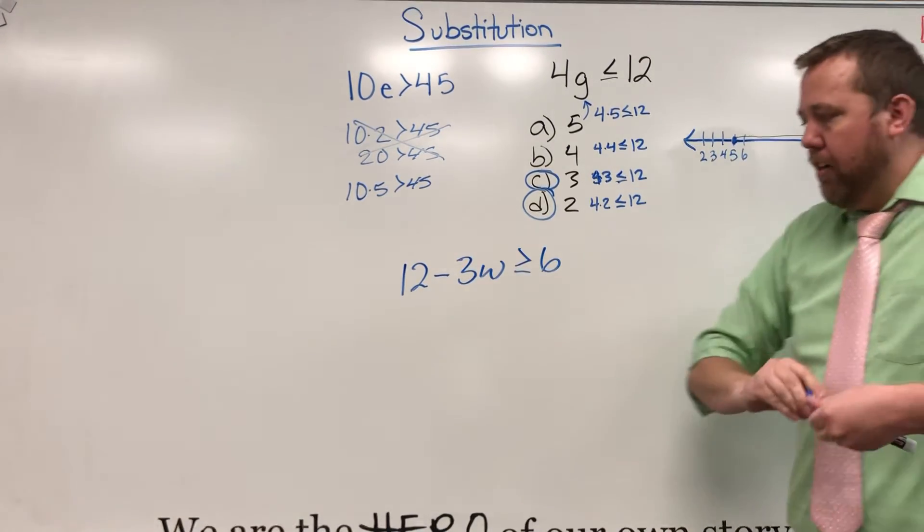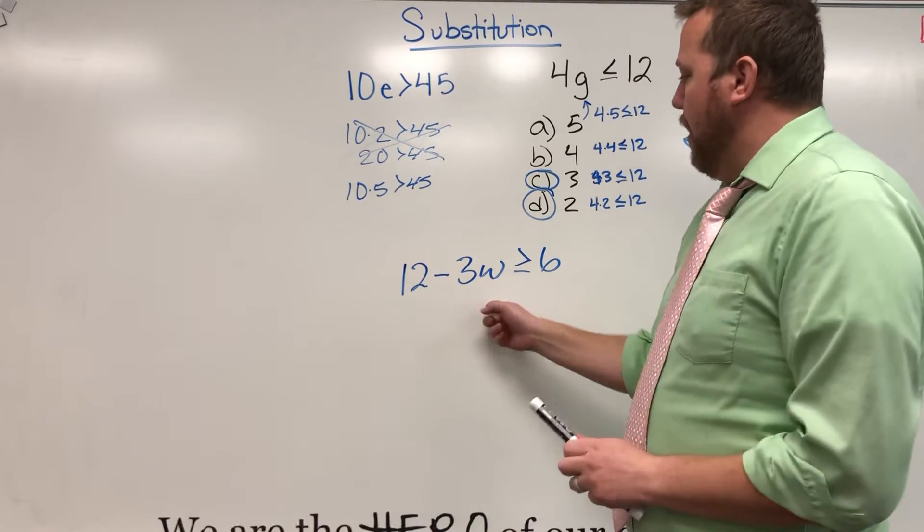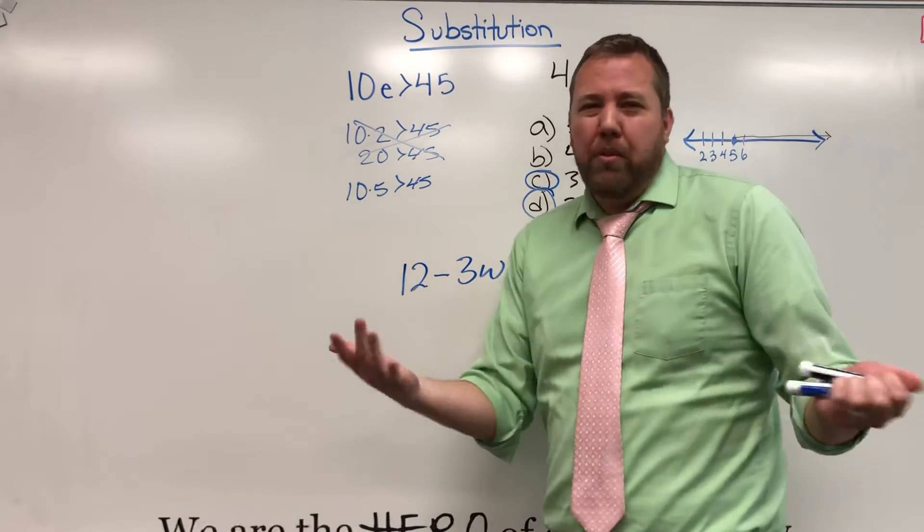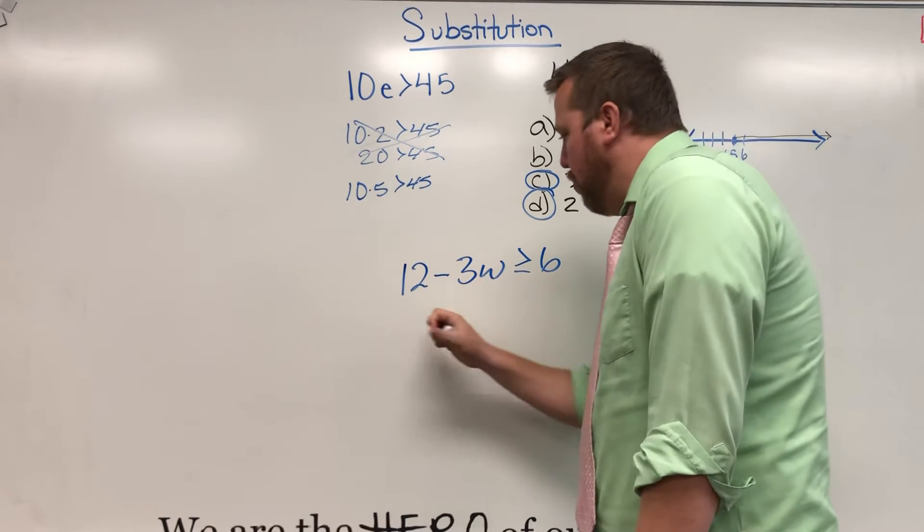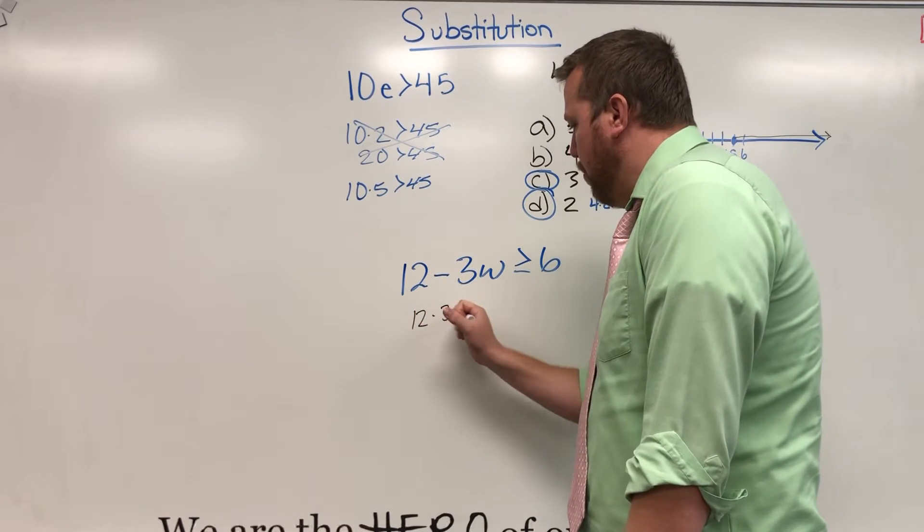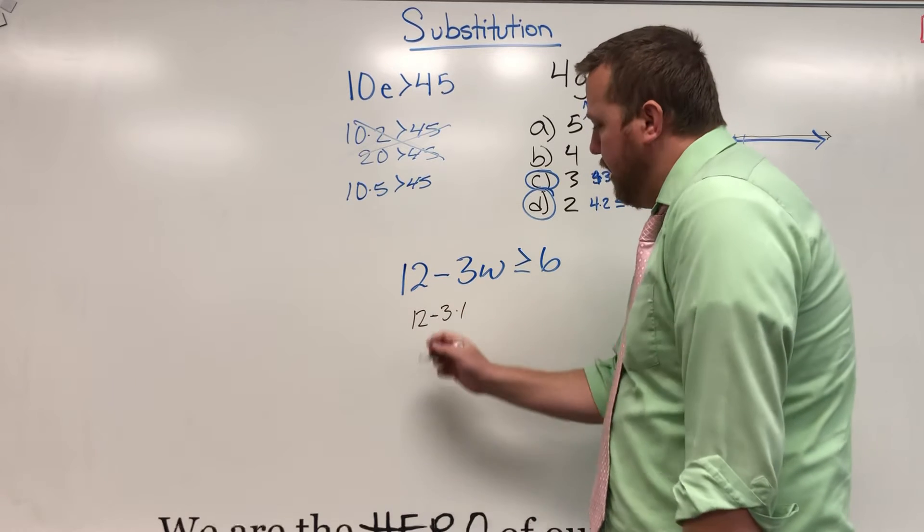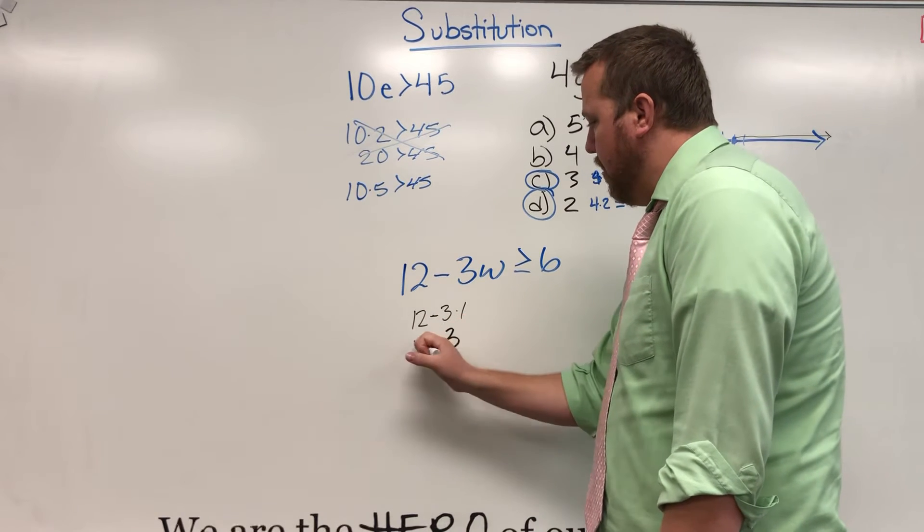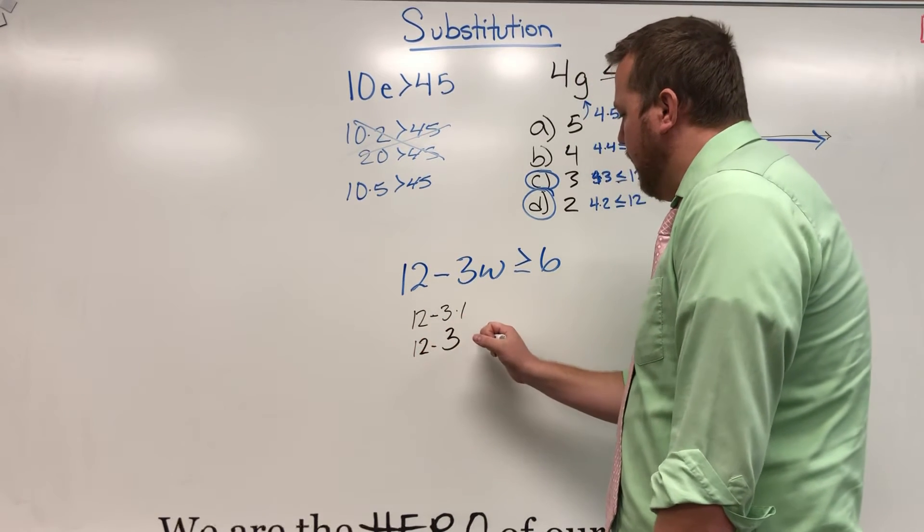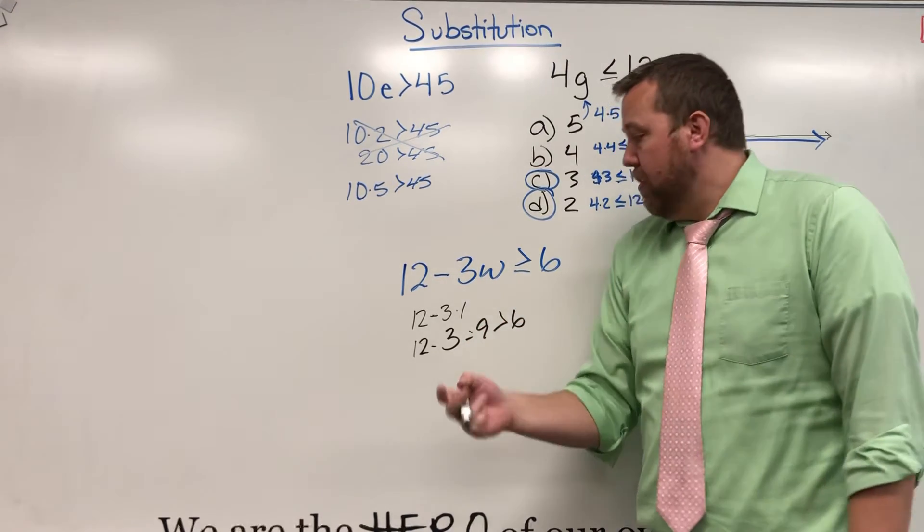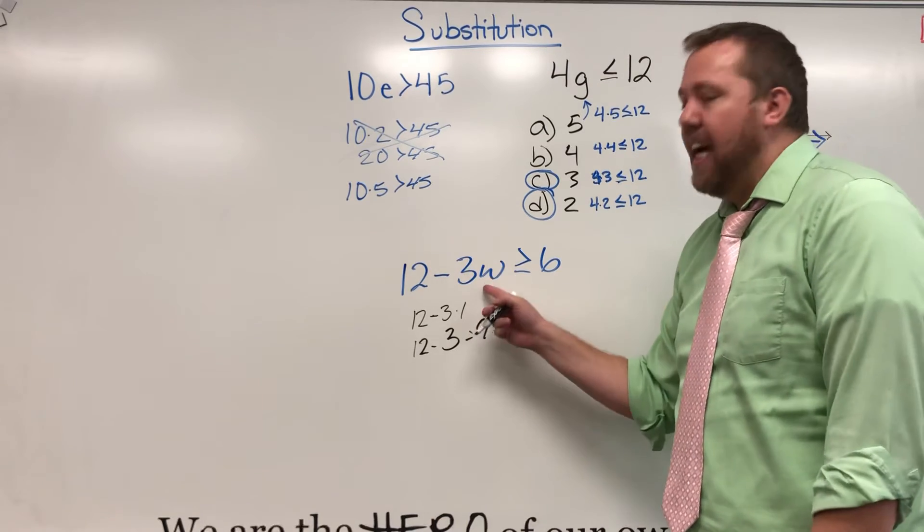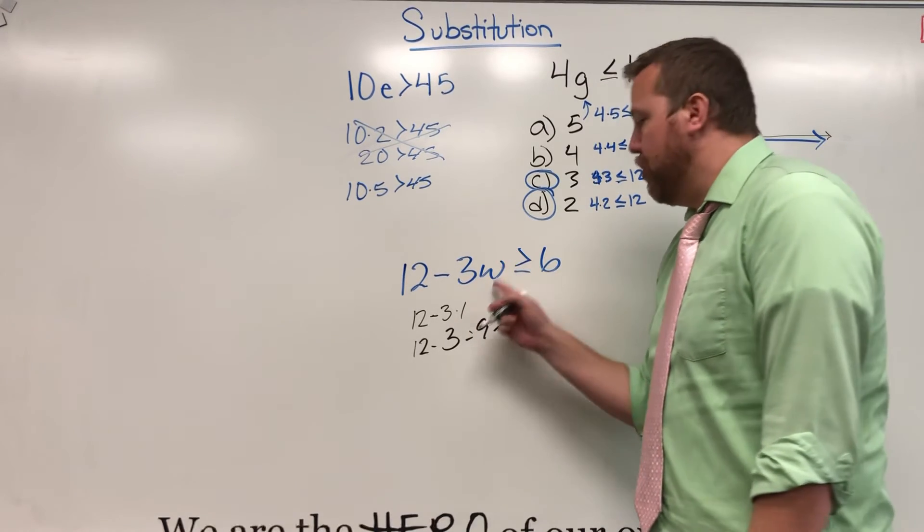Another greater than or equal that will come into play. So I might have my options of just 1, 2, 3, or 4. So 12 minus 3 times 1. Oh, order of operations. I do the multiplication first. 12 minus 3 equals 9. Is that greater than or equal to 6? Yes. So 1 makes that inequality true.